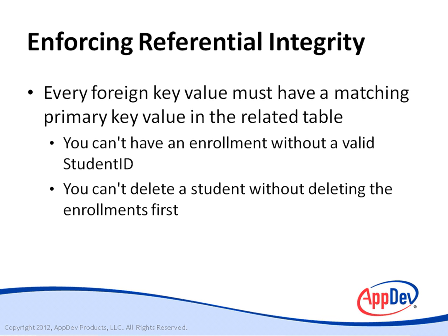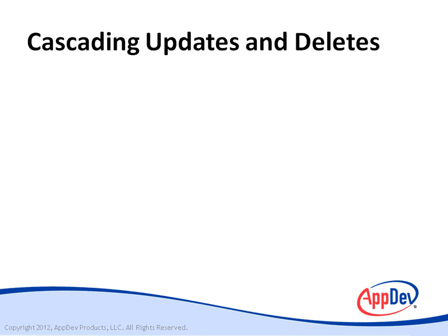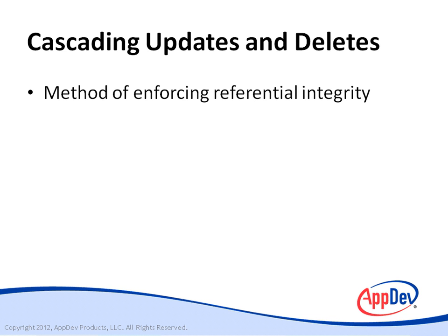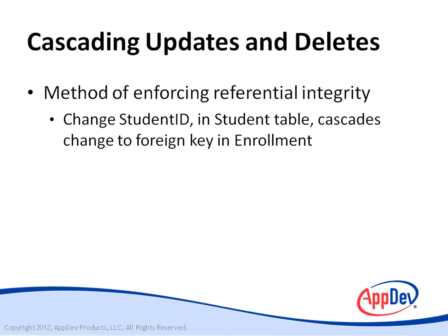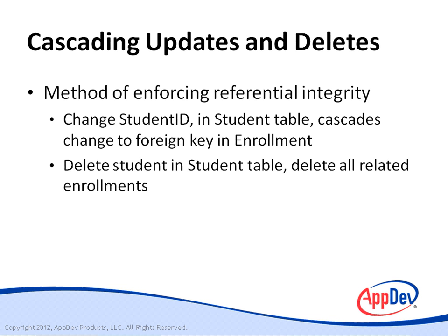SQL Server and other industrial-strength database engines optionally let the database server manage those relationships and keep them synchronized, even when you update or delete data — this is called cascading updates and deletes. SQL Server allows you to enforce referential integrity through cascading updates and/or deletes to related tables. For example, if you try to change a student ID in the student table that is also used as a foreign key in the enrollment table, SQL Server can cascade the update, permitting the change and updating all related enrollment records. Cascading deletes remove a student as well as all related enrollment records, leaving no orphans. However, cascading deletes are potentially dangerous — careless use can easily wipe out all of your historical data, so be aware.